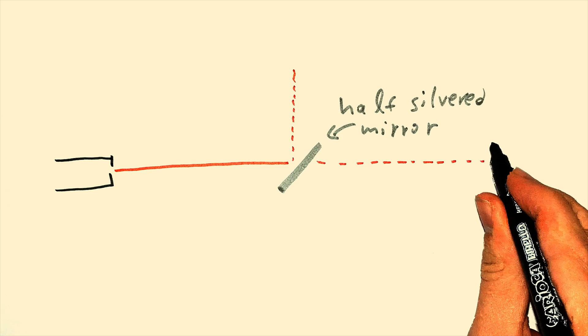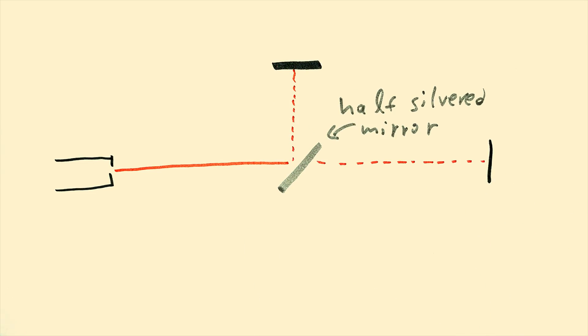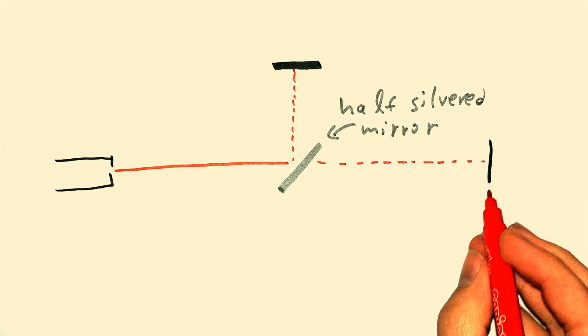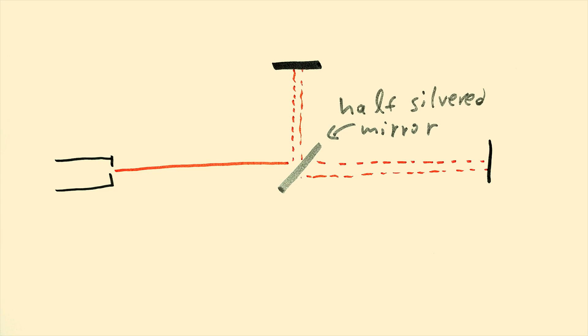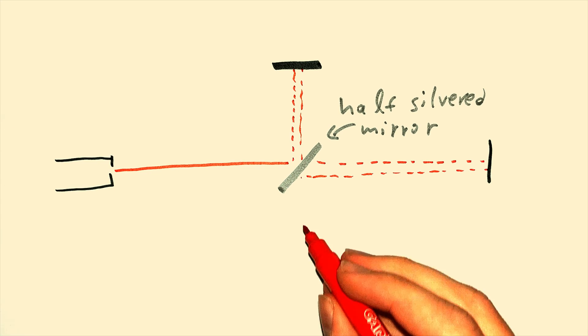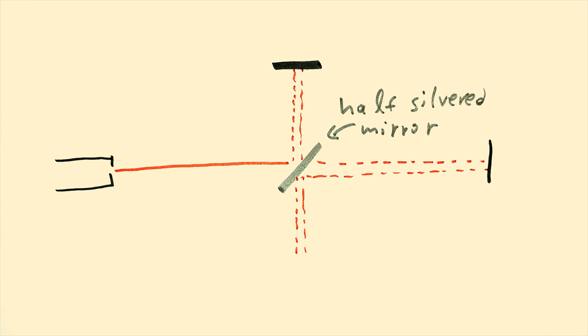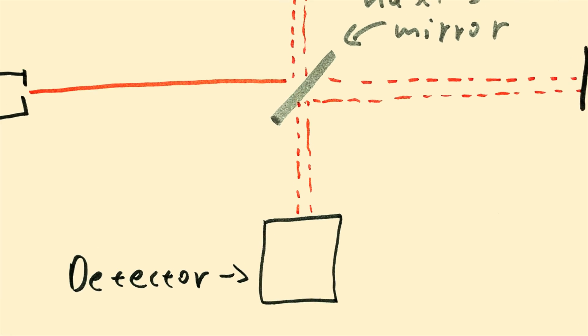Then, these two beams hit a regular mirror, which always reflects its back, and then hit the same half-silvered mirror as before. And finally, parts of the two beams reach the detector. Now, the crucial part is here.